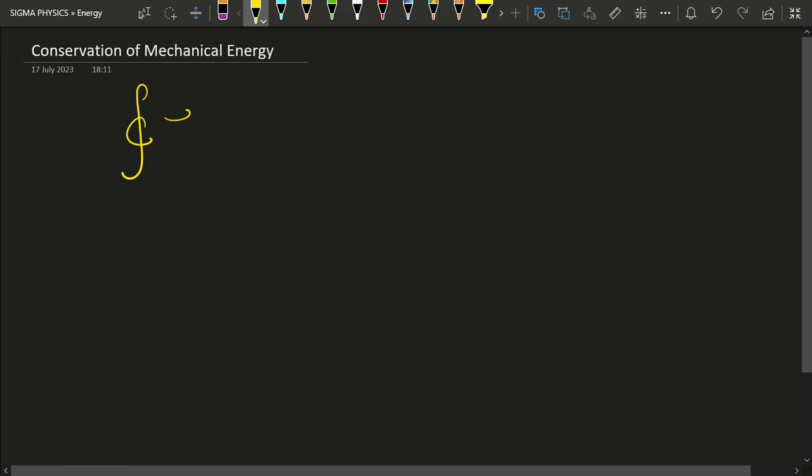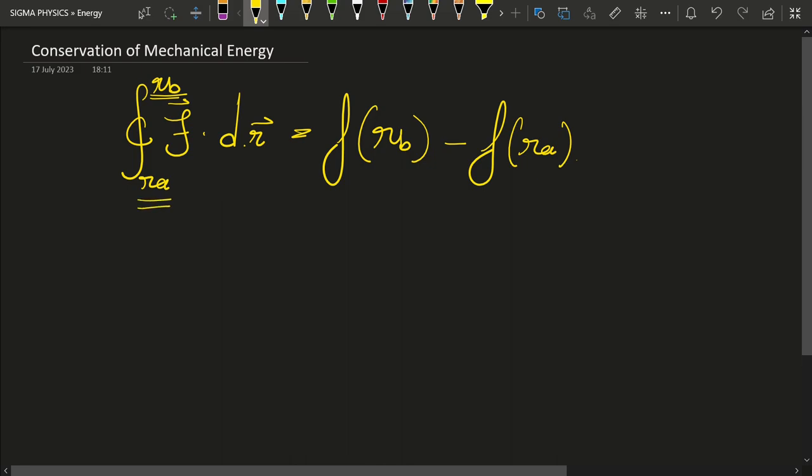So I can write it in this manner. The integral from Ra to Rb would be equal to a function of Rb minus a function of Ra. Now you might wonder why not a function of Ra minus a function of Rb. That is simply because Rb is the upper limit and Ra is the lower limit.